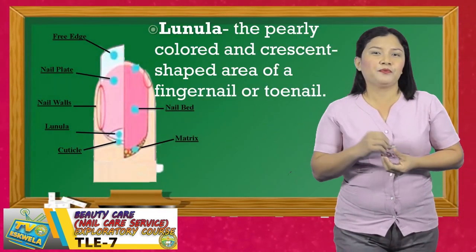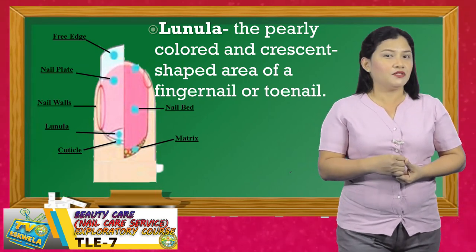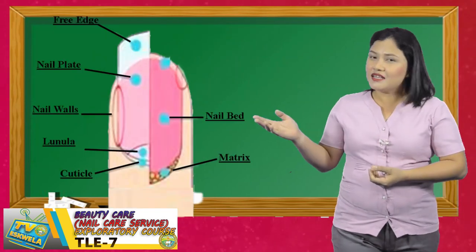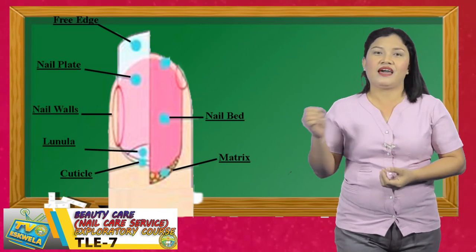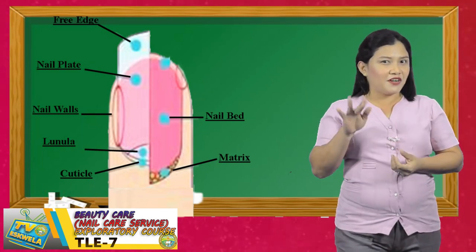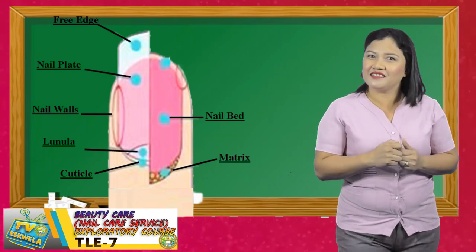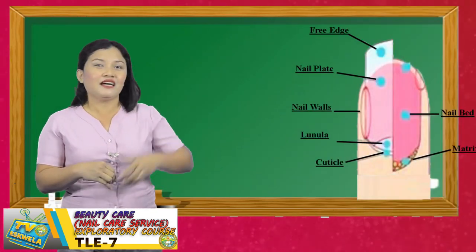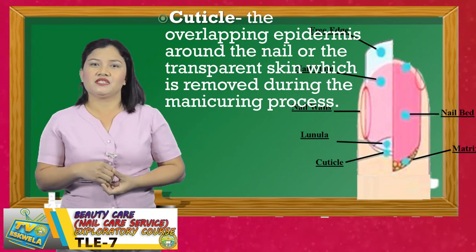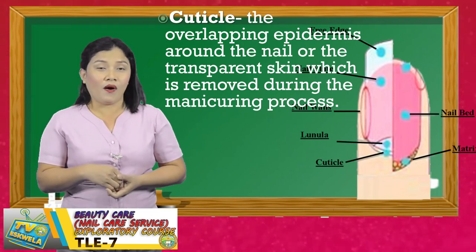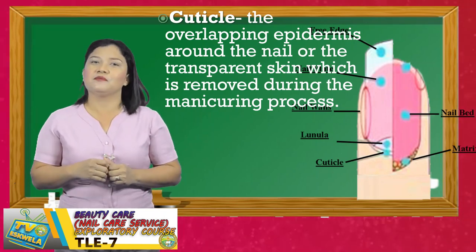Lunula is the pearly colored and crescent shaped area of a fingernail or toenail. Look at the illustration on the screen where lunula is located and take a look at your fingernails. Have you seen your lunula? We have here the cuticle. Cuticle is the overlapping epidermis around the nail, or the transparent skin which is removed during the manicuring process.